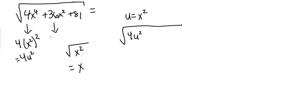And then this term is just 36x squared. So since I let u equal x squared, this is going to be 36u. So going back, this is going to be 4u squared plus 36u plus 81.